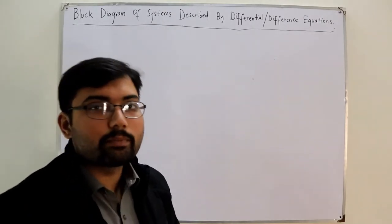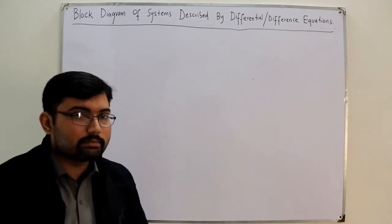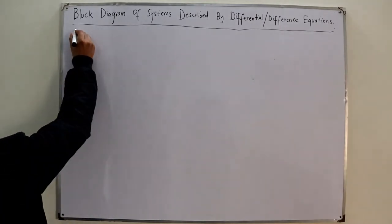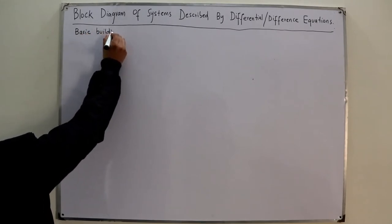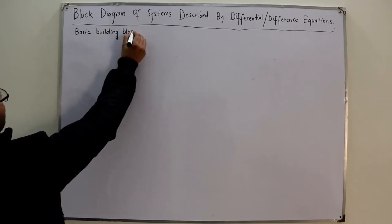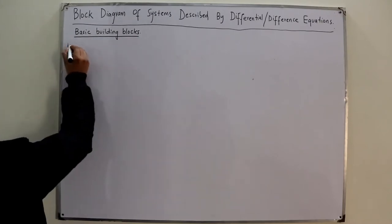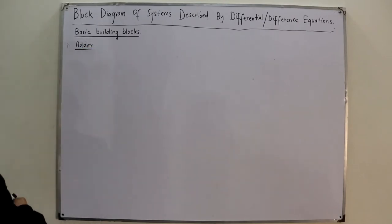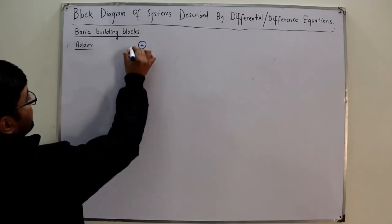You have seen block diagrams in previous semesters in electronics courses, for example in operational amplifiers. So you have the basic idea. We now require some basic building blocks. The first building block is the adder.